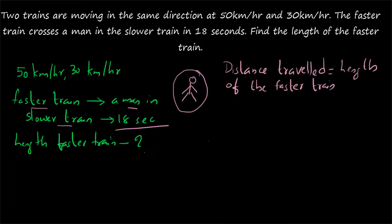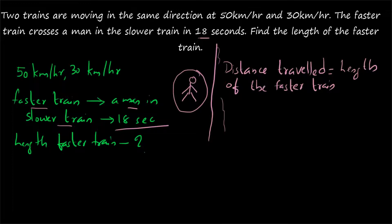Think logically. Imagine a man sitting in the slower train; another train is coming and has to cross the man fully. The time taken is 18 seconds. Within these 18 seconds, what is the distance travelled? It will be the length of the train crossing — in this case, the length of the faster train.